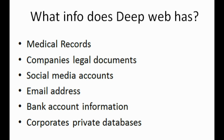What kind of information is stored in the deep web and dark web? In the deep web, the information includes medical records, company legal documents, social media accounts, email addresses, bank account information, and corporate private databases. These are very sensitive and confidential information that they do not want to put on the surface-based internet for anyone to access.